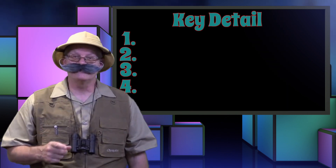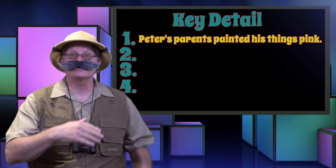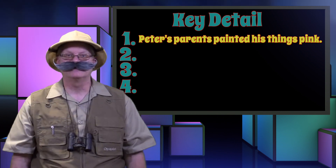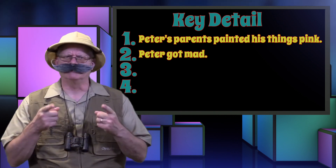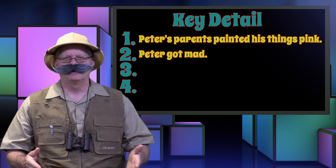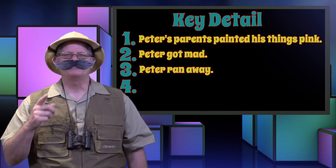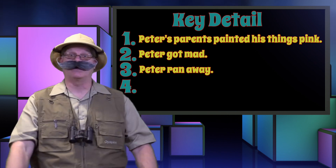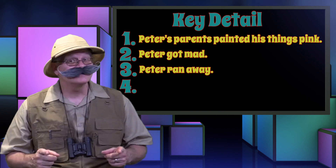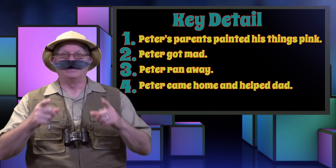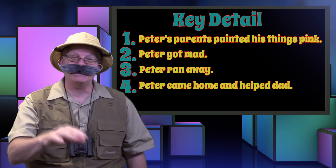The first event in the story was Peter's parents painting his things pink. The next event was Peter got mad. Then, Peter took some of his things and ran away. Last, Peter came home and helped his dad paint the chair pink for his sister.